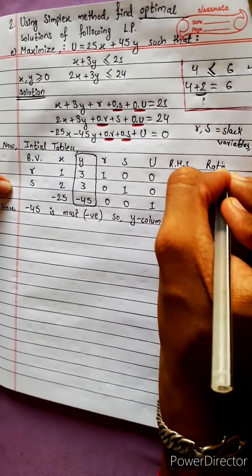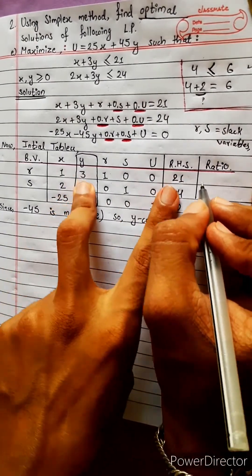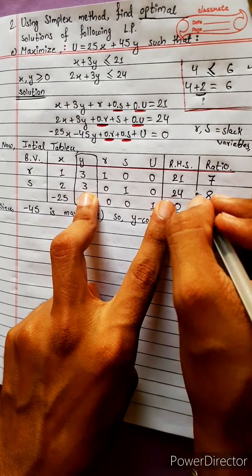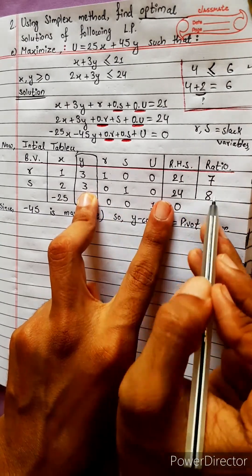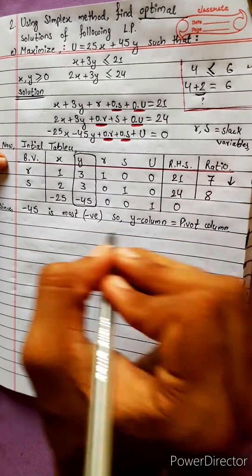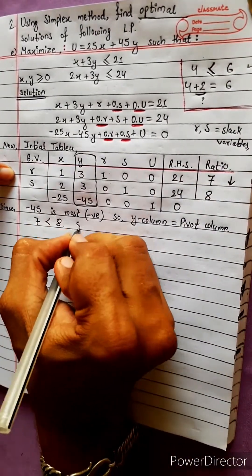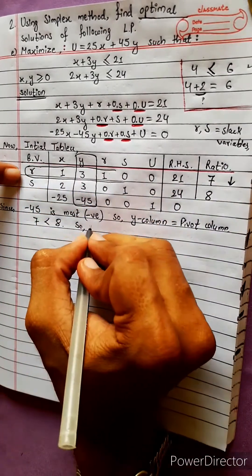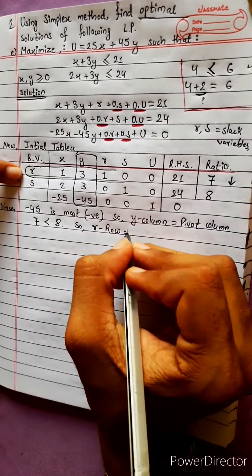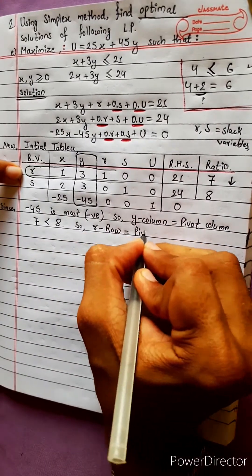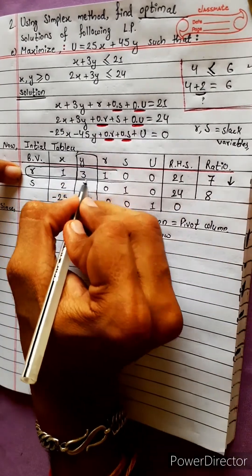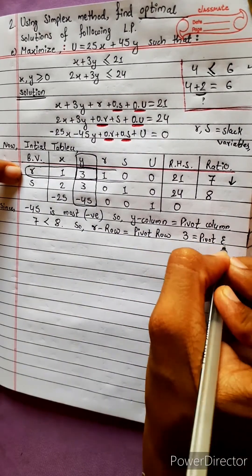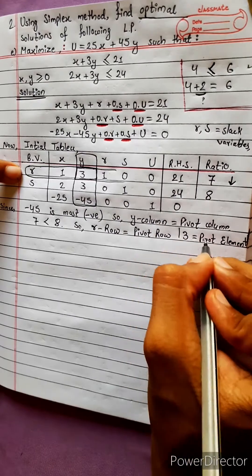Now we compute the ratio test. We divide: 21 divided by 3 equals 7, and 24 divided by 3 equals 8. Since 7 is less than 8, row 1 is the pivot row. The pivot element equals 3.